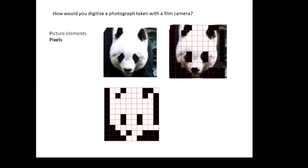This video is about digital images. How would you digitize a photograph taken with a film camera? How would you change it into ones and zeros? You split the picture up into picture elements or pixels.